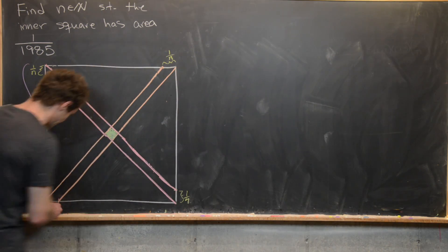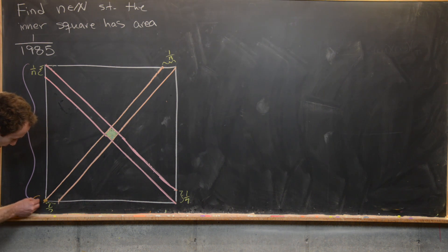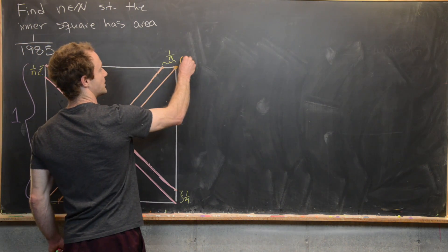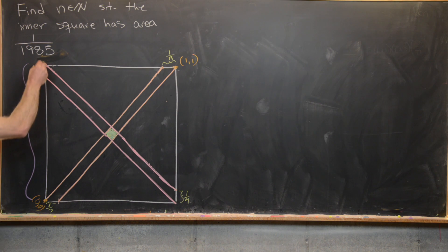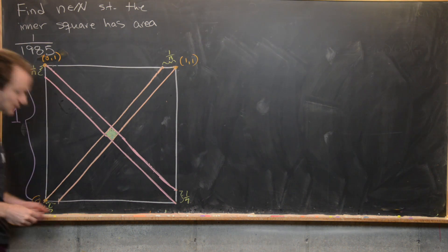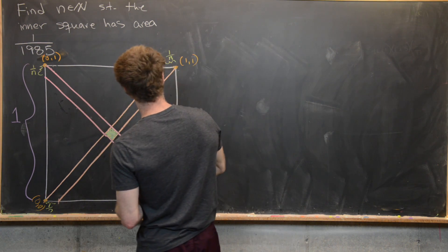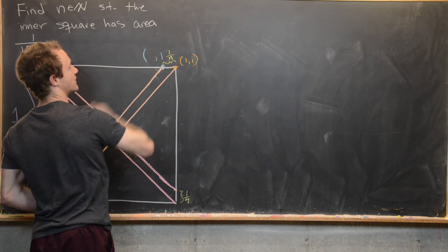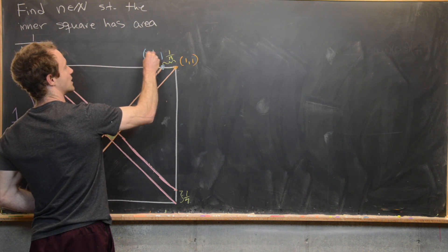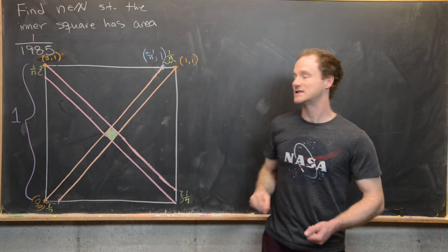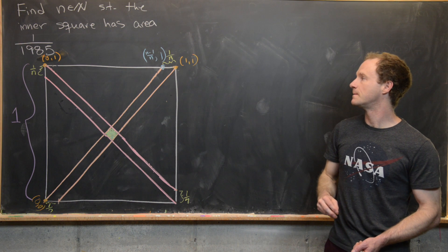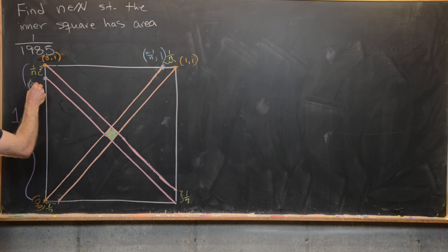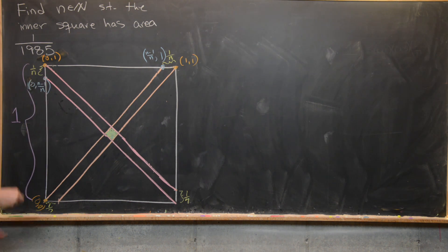I'll place one vertex of the square at the origin, so that's (0, 0). That makes the opposite vertex (1, 1), and the top-left vertex (0, 1). Furthermore, one of the marked points on the top edge is given by x = (n−1)/n, y = 1 — which is the same as 1 minus 1/n. And the marked point on the left edge has x = 0 and y = (n−1)/n.